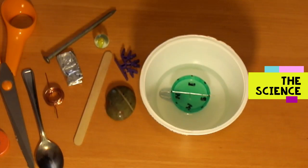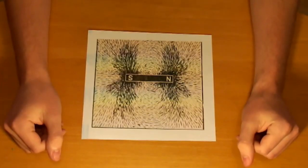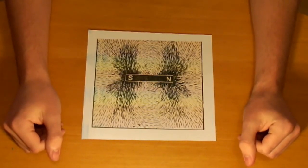Now my son, who is a physics student, is going to tell you about the science behind the project. A magnet can be used to attract magnetic materials. It also has a magnetic field around it.